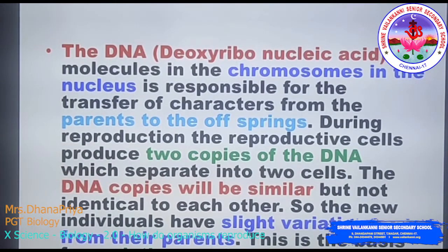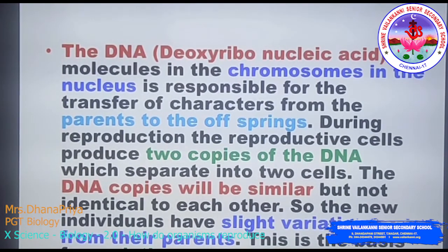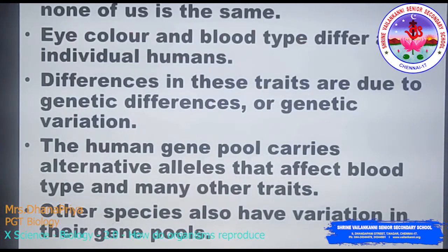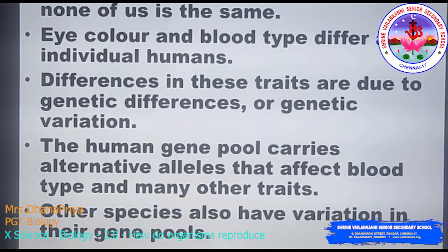The DNA copies will be similar but not identical to each other, so new individuals have slight variation from the parents. This is the basis for variation and evolution of new species. For example, your mum and dad look different, and your siblings also look different because of variation. Though all of us have similar organs — the same heart, same kidney, same brain — the outer morphology may differ while the anatomical structure may be the same.